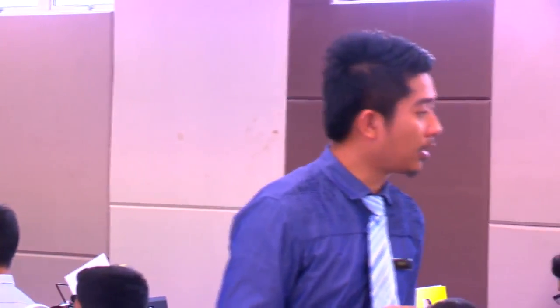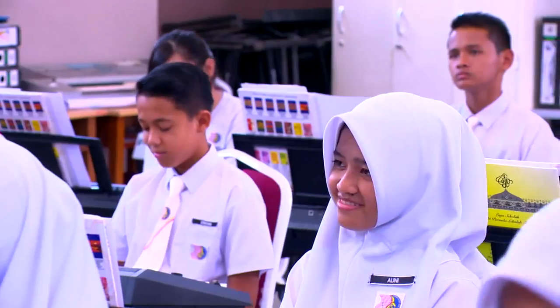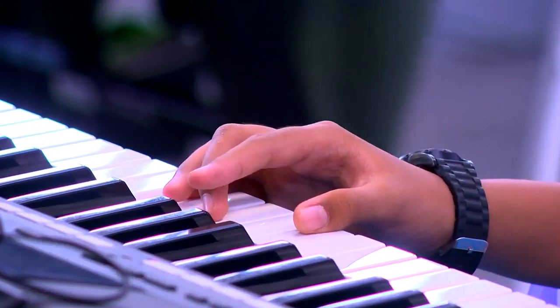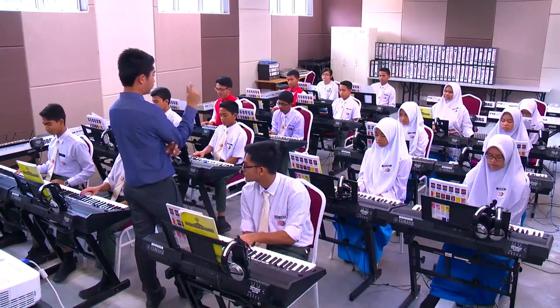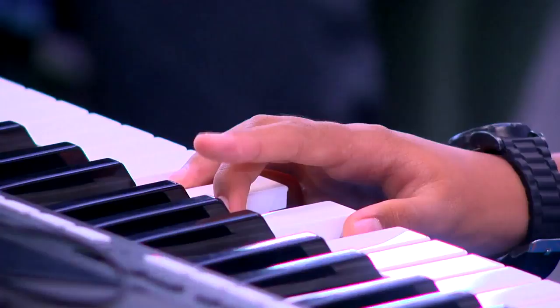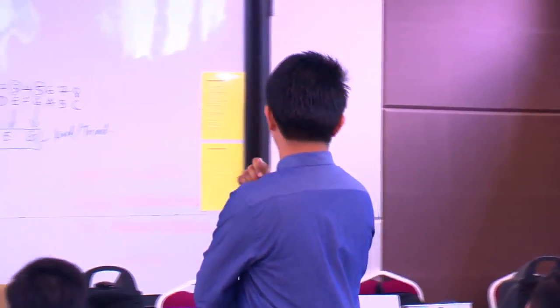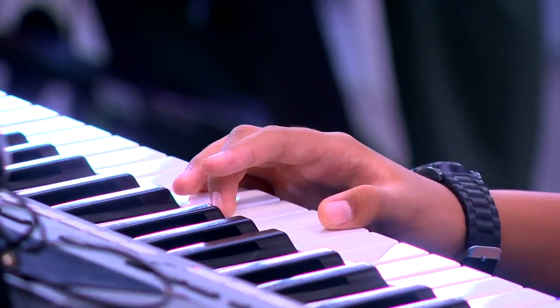Baiklah, ini bunyi yang betul - semua E major. Seterusnya kita pergi F major. Kita mulakan dengan semi-breve - one, two, three, four. Baiklah. Seterusnya kita pergi lagi pantas - G major dalam crochet. Ready? One, two, three, four.